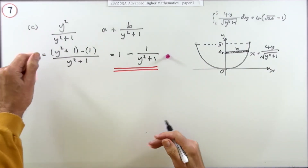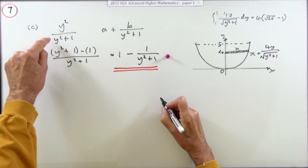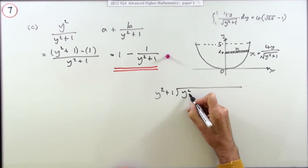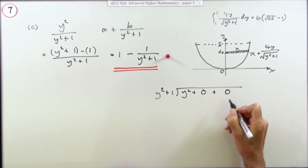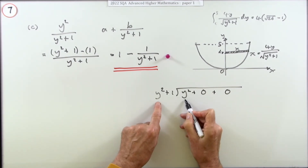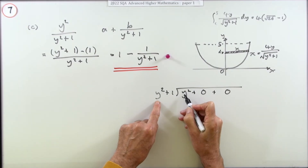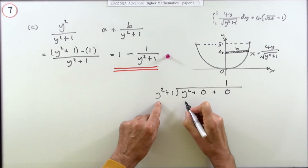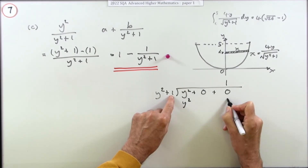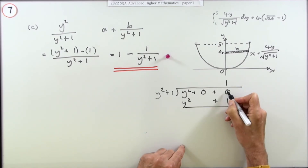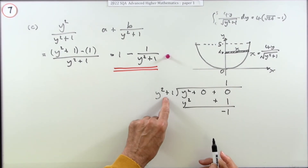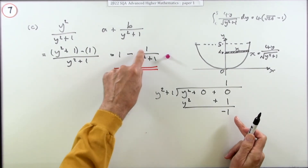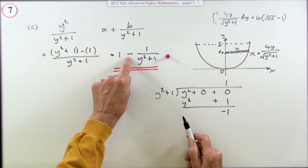Alternatively, use long division: divide y² + 1 into y² (writing in all powers including missing terms). It goes in once — one times y² + 1 gives y² + 1. Subtract to find the remainder: 0 − 1 = −1. So dividing gives 1 with remainder −1, meaning the result is 1 − 1/(y² + 1), confirming the algebraic approach.